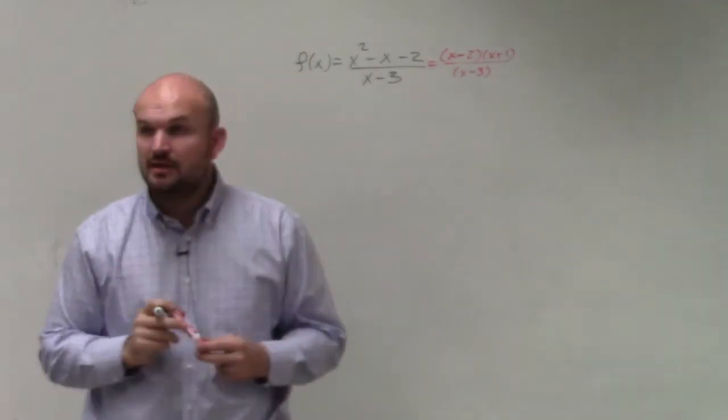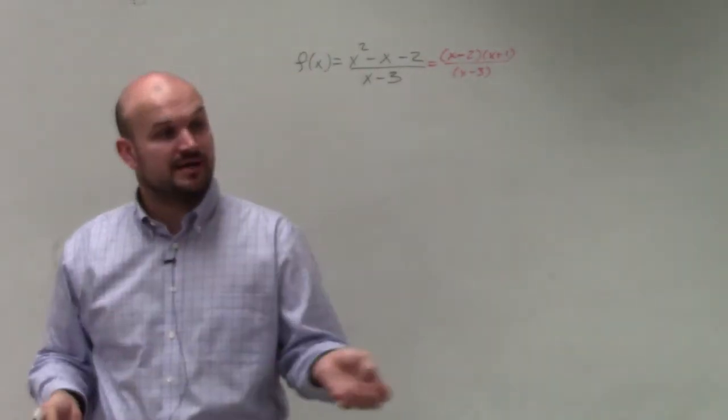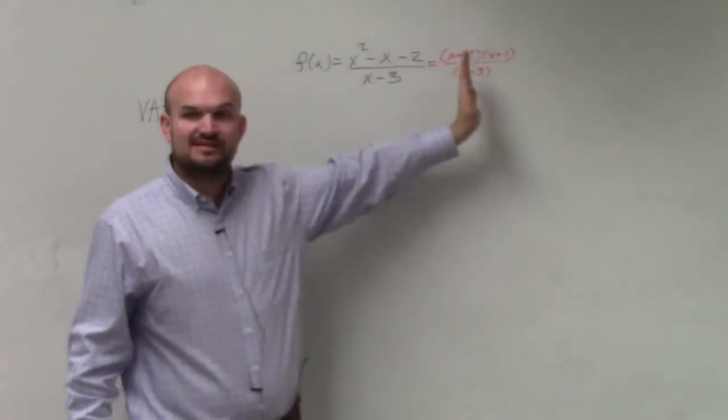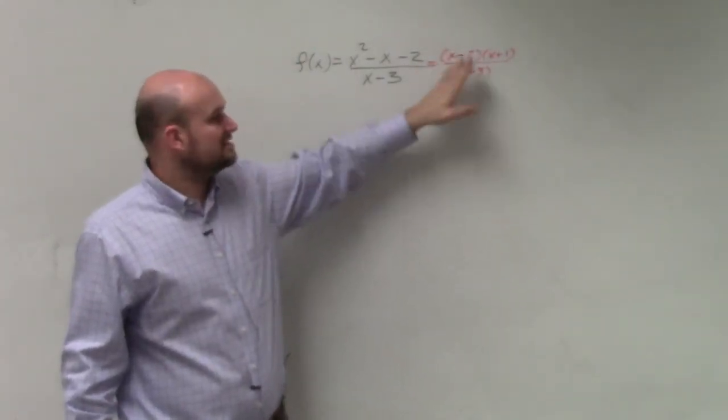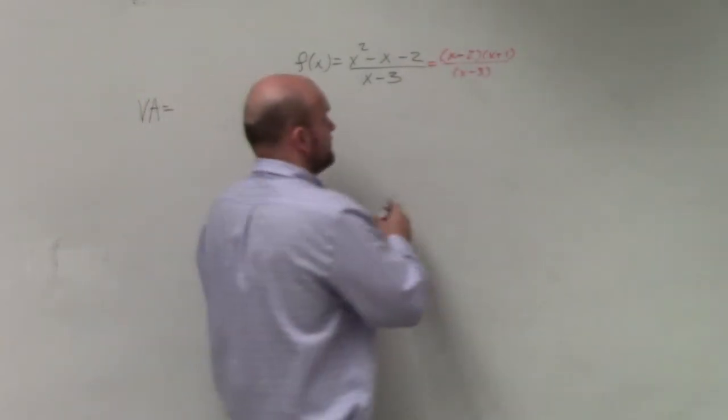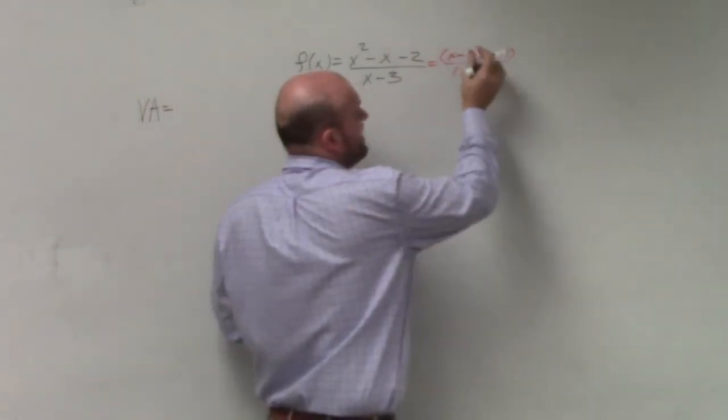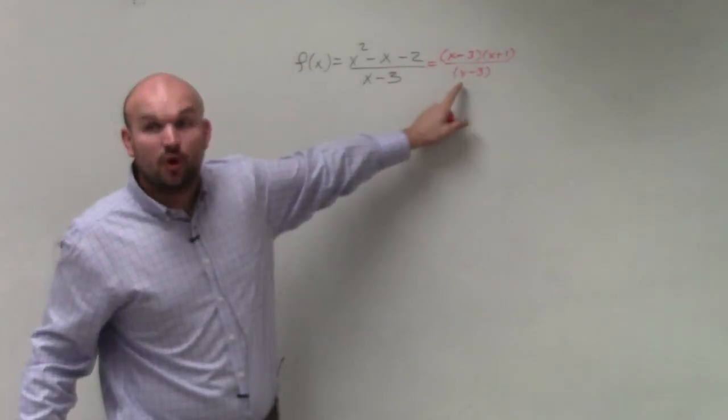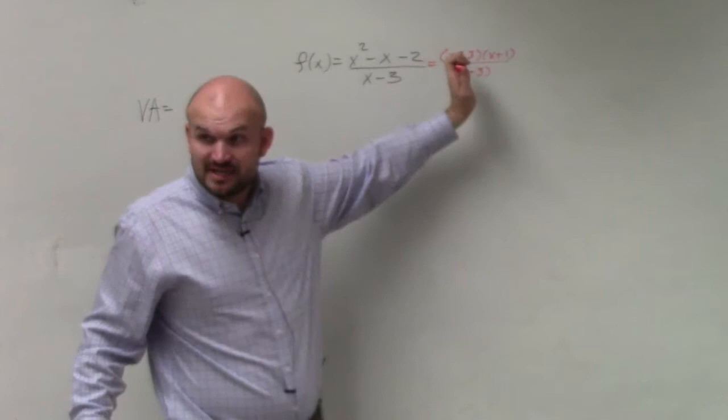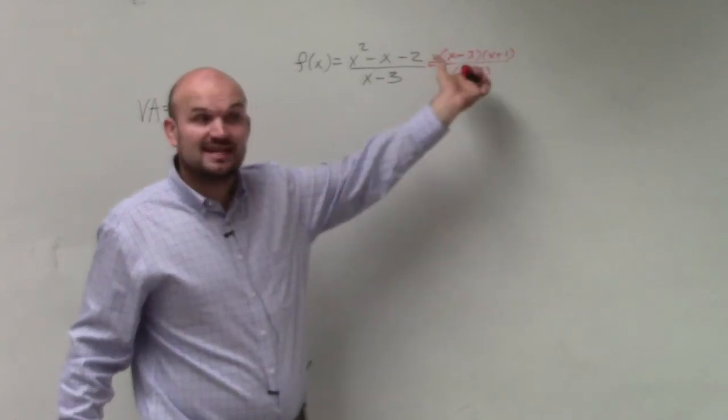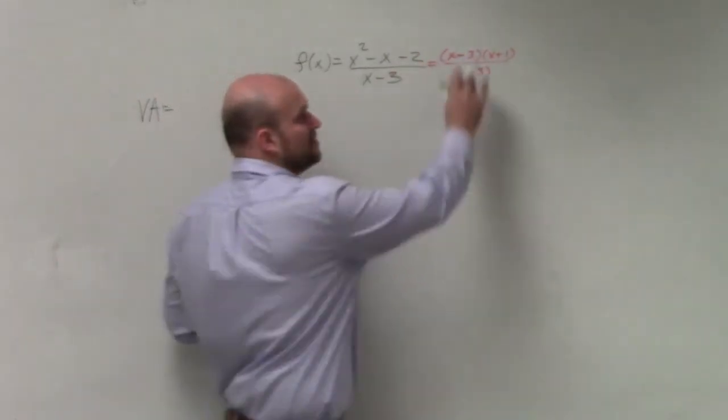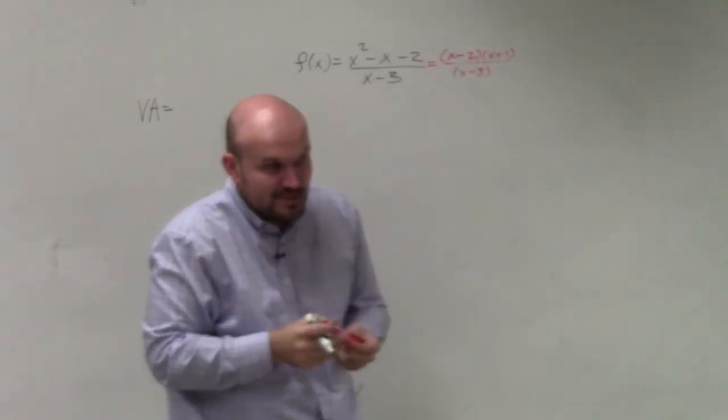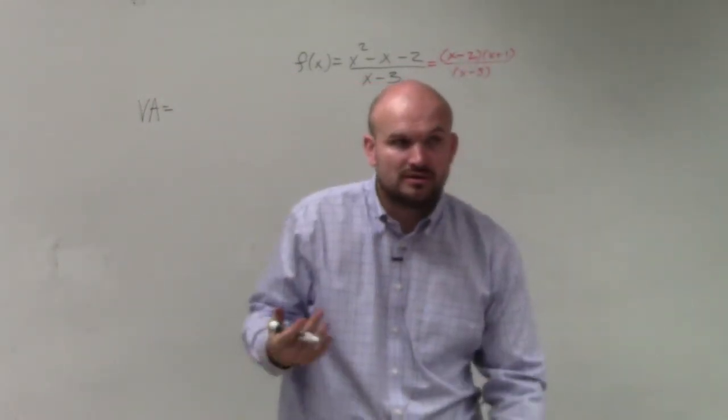This is very important because they're asking us to find the asymptotes. If I could use the division property and divide this out - let's just pretend this was an x minus 3 as well - if I could divide that out, that's no longer an asymptote. That's now a hole. So if you can divide out your terms, it creates a hole. It's still a discontinuity, but it's a hole, not an asymptote. When we're finding asymptotes, if we have a hole, that's not an asymptote.